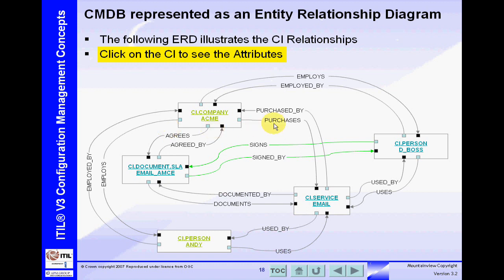If we make a change to the email service, there are two users that are affected, and it also affects the Acme Corporation. That's very important. In addition to these relationships, we need to understand some of the details or attributes.